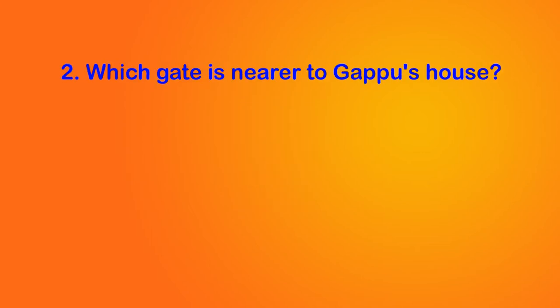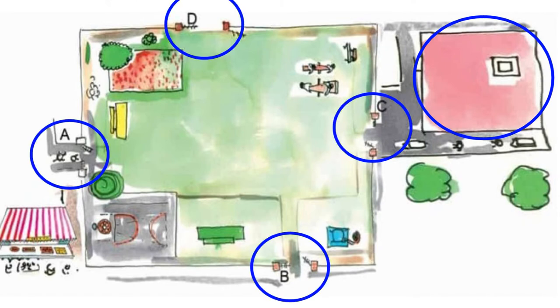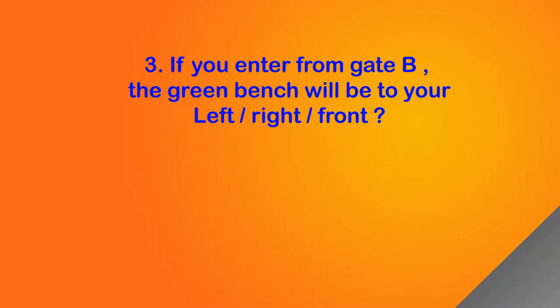Now let's move to the second question: which gate is nearer to Gapu's house? Observe Gapu's house and the four gates. From the picture it's clear that gate C is nearer to Gapu's house.